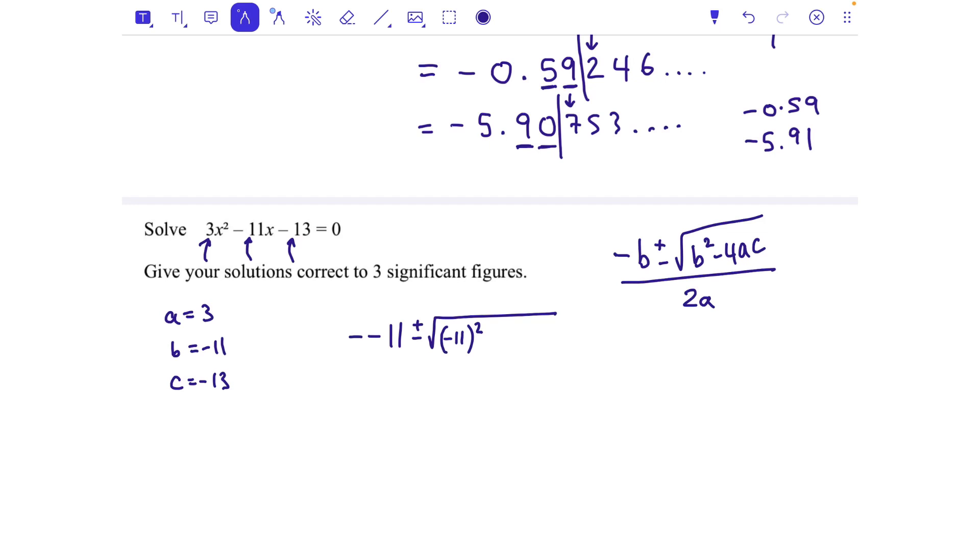Because when you put a minus 11 squared in your calculator without the brackets, it does the squaring bit first and then it makes it minus, so it goes wrong. So make sure you put it in brackets. Minus 4 times 3 times minus 13, all over 2 times 3.